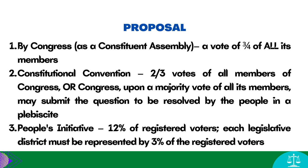Second is through a constitutional convention — a body separate and distinct from Congress itself, whose members shall be elected by the people of their respective districts. There are two ways a constitutional convention may be convened: Congress may directly call one by two-thirds votes of all its members, or Congress, by a majority vote of all its members, may submit the question of whether or not to call a convention to be resolved by the people in a plebiscite.